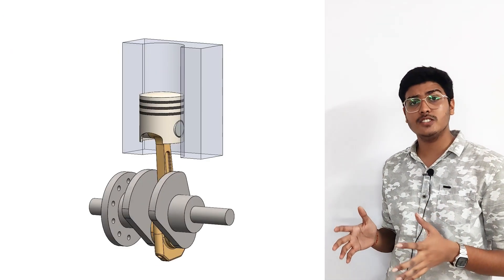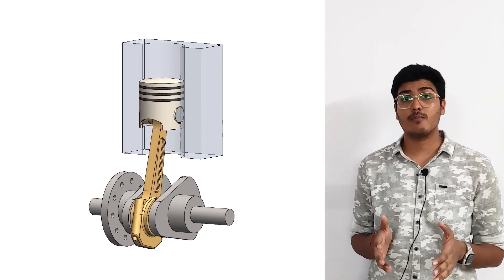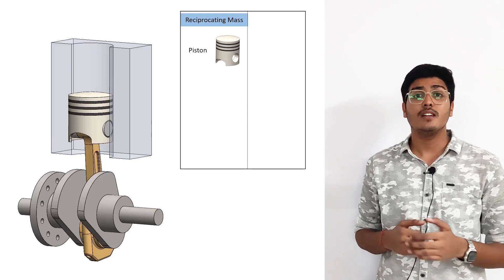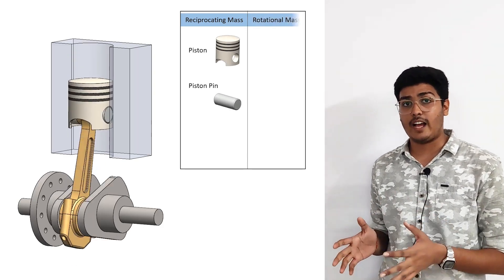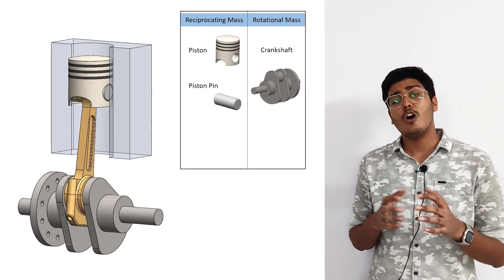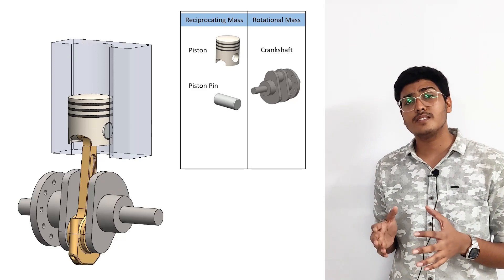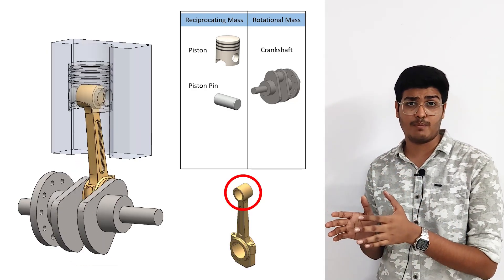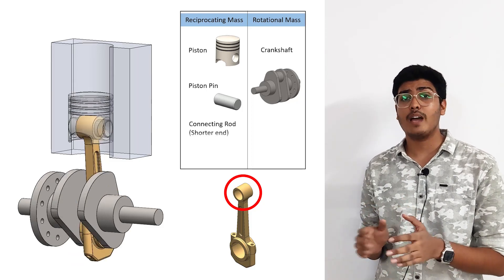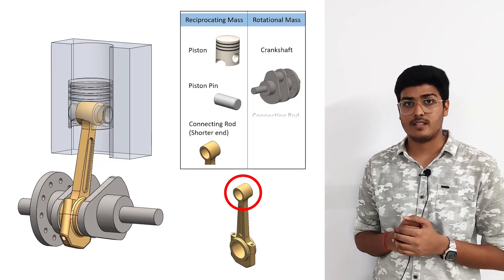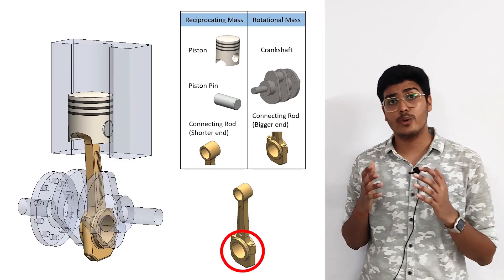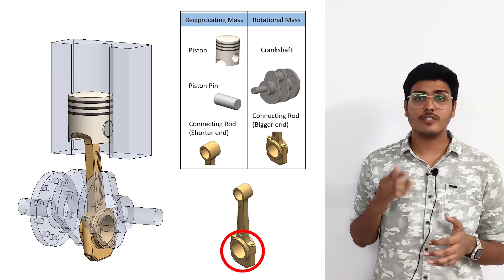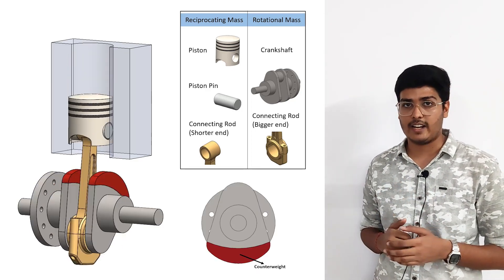On looking at an engine we can see we have some reciprocating masses and some rotational masses. Here the piston and piston pin are the reciprocating mass, and the crankshaft is the rotational mass. The shorter end of the connecting rod is reciprocating in the same manner as the piston, so its mass can be added to the total reciprocating mass. The bigger end of the connecting rod is rotating with the crankshaft, which can be balanced with the addition of a counterweight on the opposite end of the crankshaft.